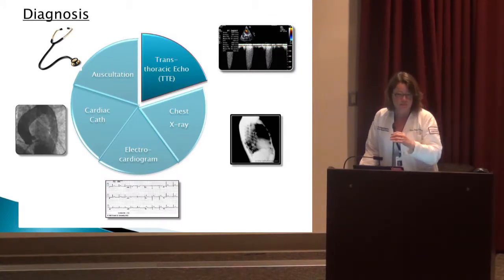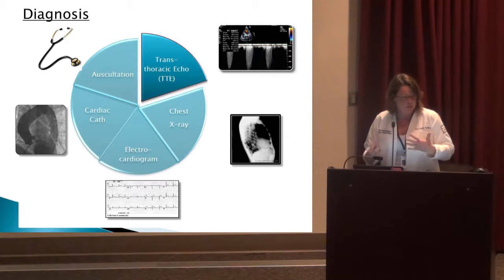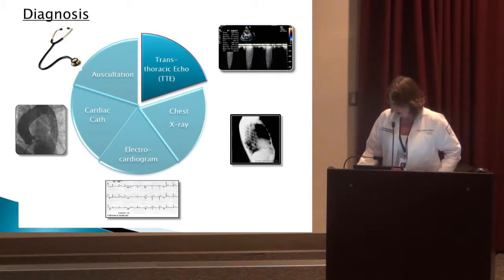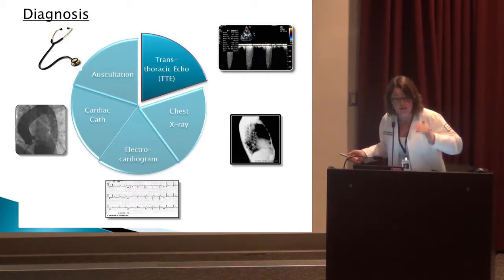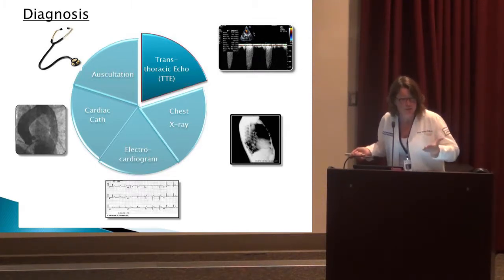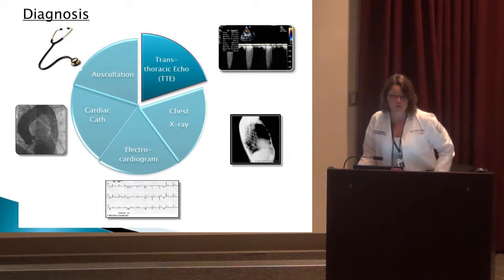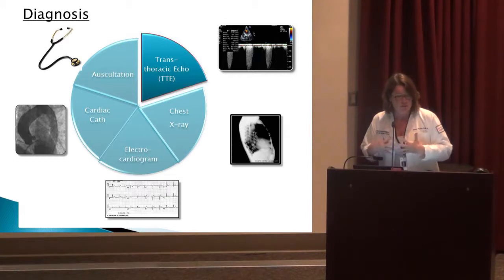Diagnosis typically starts when we hear a murmur. The patient is then sent for an echocardiogram to look at the valves, take measurements, and see what the murmur is due to. On chest X-ray you can sometimes see an enlarged heart or even a calcified aortic valve. EKG is not definitive but can show LVH and ST changes. Cardiac cath is another measure we use to assess valve area, pressure gradients, and coronary arteries — to determine whether the patient needs SAVR, CABG, PCI, or a subsequent TAVR.